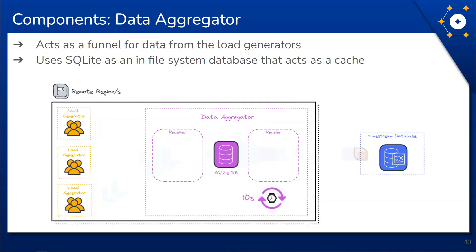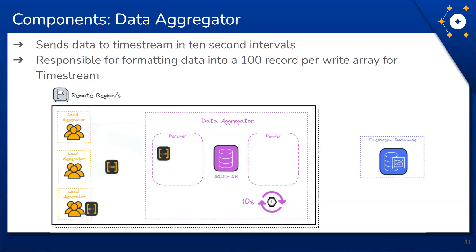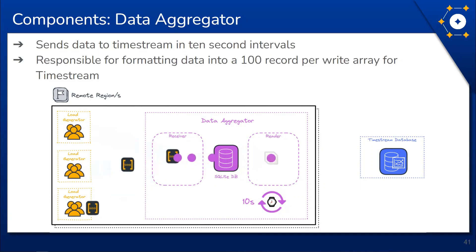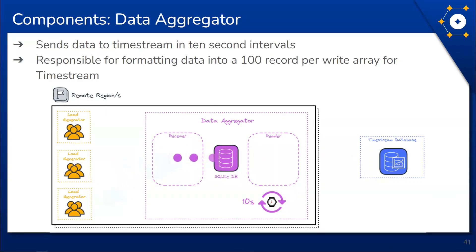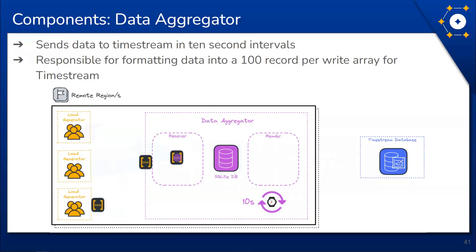The aggregator then writes the data from the cache to the TimeStream database in 10-second intervals. The aggregator is also responsible for utilizing TimeStream's ability to handle batch write requests of 100 records per write, and handles AWS throttling exceptions to achieve more efficient write speeds. At the end of the test, the aggregator continues attempting to send data to TimeStream until it stops receiving data.